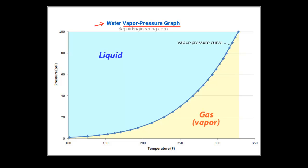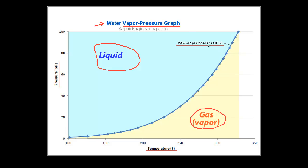However, similar-looking vapor-pressure graphs are available for all fluids. The vertical axis, or y-axis of the graph, is used to plot the pressure of the water, and the horizontal axis, the x-axis, is used to plot the corresponding temperature. The upper portion of the graph is labeled as a liquid, and the lower section is a vapor or gas. This line is known as the vapor-pressure line, or the vapor-pressure curve, and it identifies the point of transition from a liquid to a gas — the process that we typically call boiling. Remember this term, vapor-pressure line, as I will refer to it again in a moment.